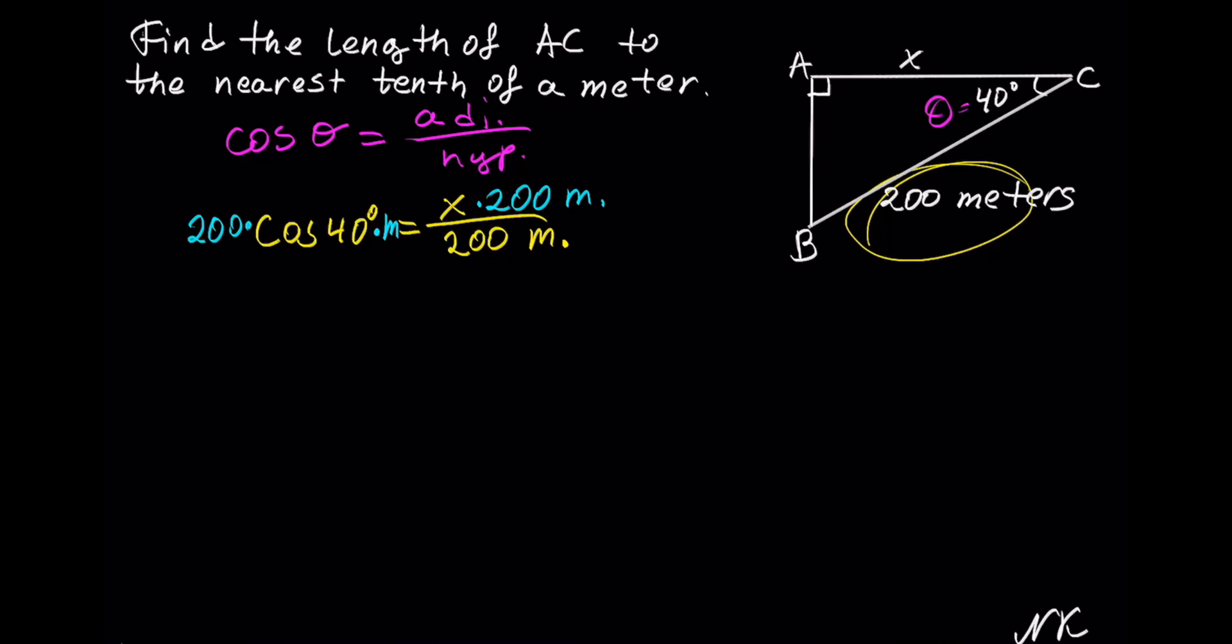So on the right, we get that 200 and 200 will cancel, meters and meters will cancel, and we have X is equal to